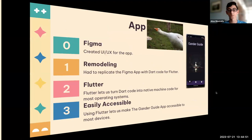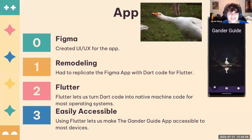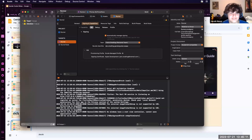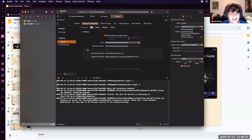We wanted to create an app, so we used Figma to create the UI/UX. However, the plugins to convert the Figma design into Dart code did not work, so we had to learn Dart and how it works with Flutter to replicate the app. Flutter uses ahead-of-time (AOT) compilation for iOS and just-in-time (JIT) compilation for Android, turning Dart code into native machine code — making Gander Guide accessible by most mobile devices.